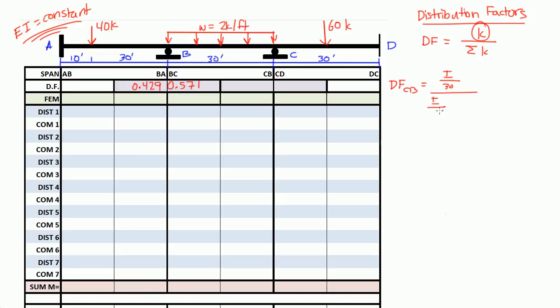So the distribution factor for joint C, let's do CB first. Distribution factor for CB is your K value of CB, which is I over 30, divided by the sum of the K values for the spans CB and CD. So for CB it's I over L, which is 30, plus the K value for CD, which is I over 30. I's cancel out again. You have 1 over 30 divided by 1 over 30 plus 1 over 30. So your distribution factor for CB should be 0.5. And I'm going to write 0.5 up here, 0.500.